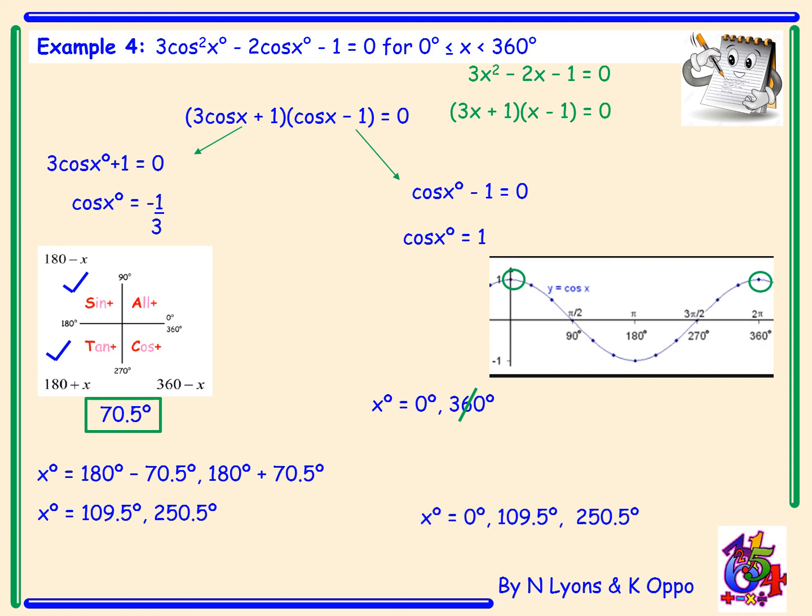The final step is to state and order all of our angles: x equals 0 degrees, 109.5 degrees, and 250.5 degrees.